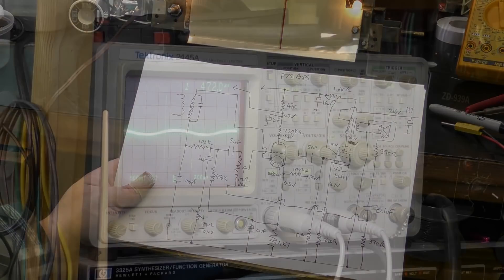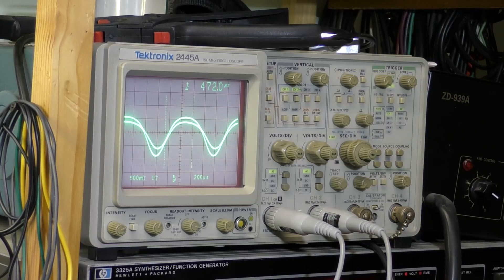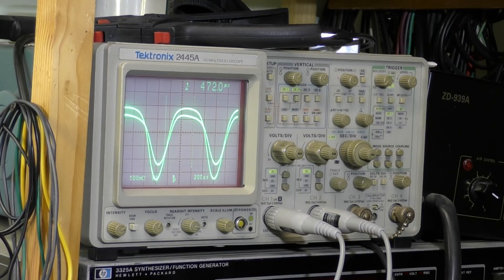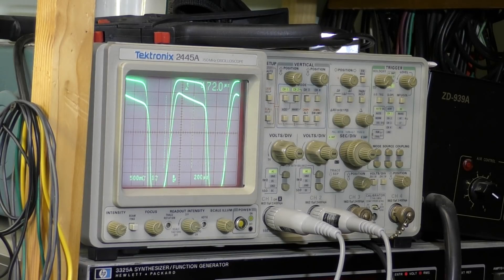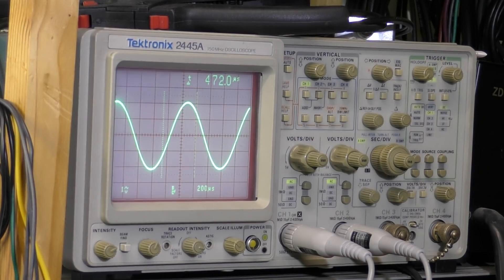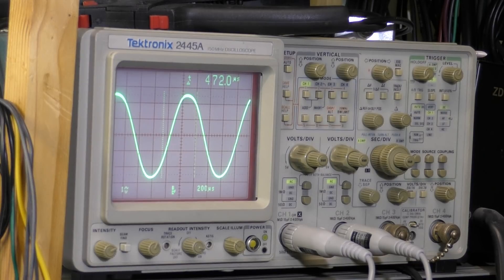Just having a look at the output of the transformer and the input to the grid of the output valve. I have turned the feedback off so I've made it worse, but even if I put it back on it's still pretty hideous. I'm just driving the output valve directly on its grid and that's not too bad, that's a good output. So need to look at the preamp.